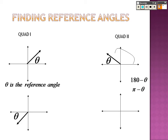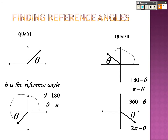If it's in quadrant 3, you take that angle and subtract 180 from it to figure out the reference angle. And if it's in quadrant 4, it's 2 pi, or 360, minus that angle.